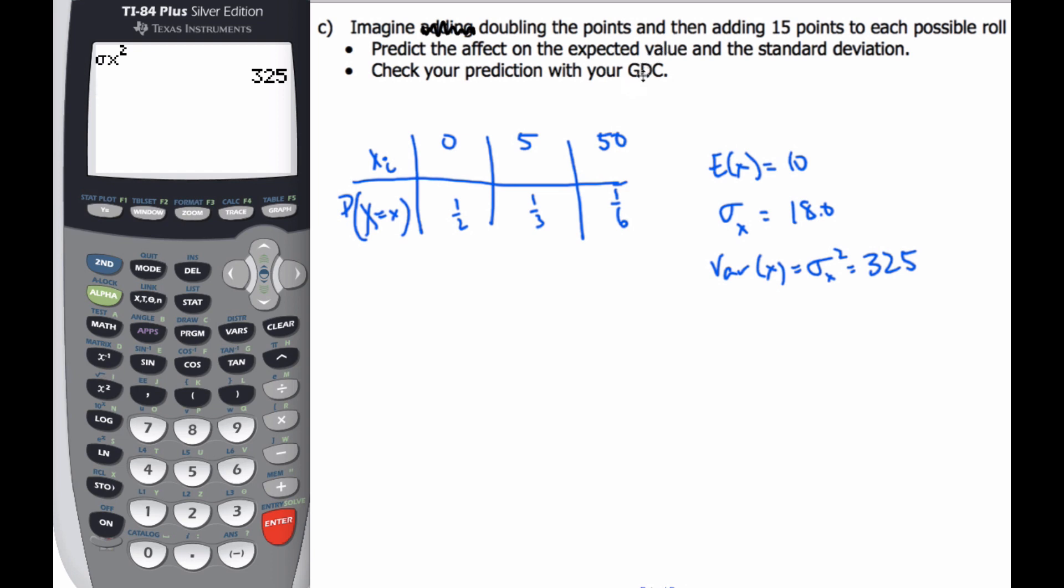So pause it. Okay. Now you're back. So if I'm going to actually do this little experiment here, I'm in essence going to take every x value multiplied by 2 and add 15. So this is 0, 2 times 0, 0 plus 15 will become a point total of 15. This point total will be 2 times 5 is 10 plus 15 is 25. 2 times 50 is 100 plus. Here are my actual, my new outputs, my new possible values.